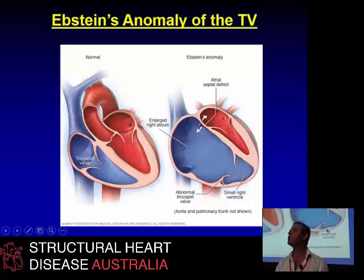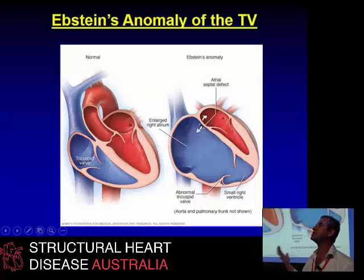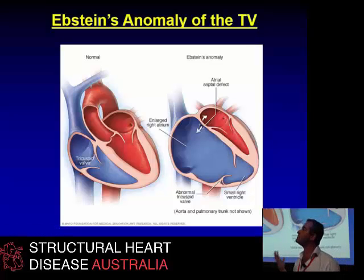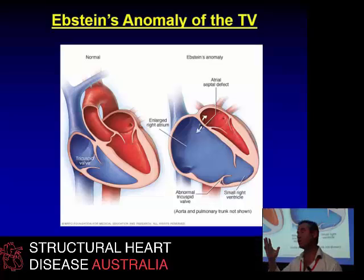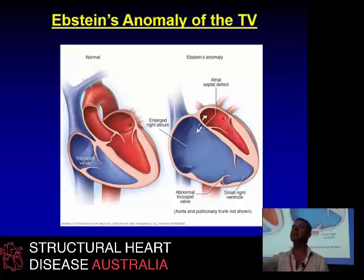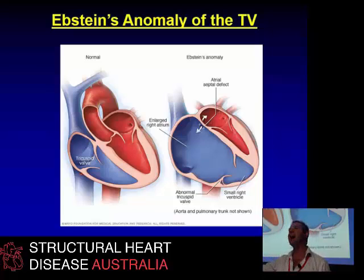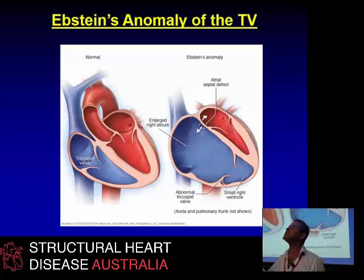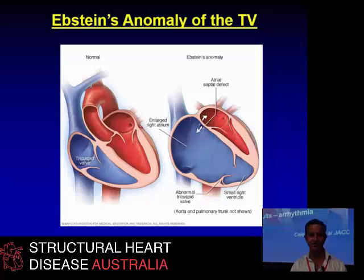The small right ventricle — the thing that determines how people with Epstein's Anomaly do is not how big their right atrium is. It's how is their functional RV doing, and especially how is their LV — their under-filled, fibrosed LV doing. So please don't think of it just as a disease of the right atrium.